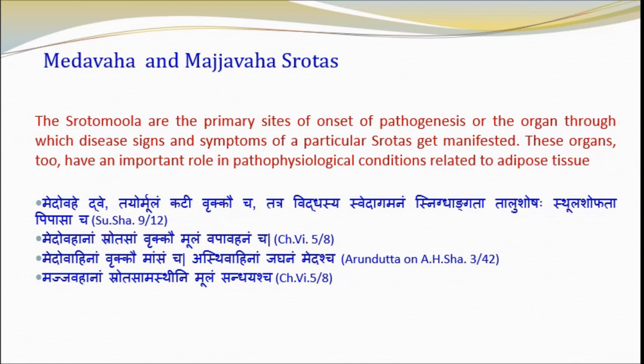The roots of Medhavahi Srotas are Kati, Vrikka and Vapavahni, and the mool of Majjavahi Srotas are Asthi and Sandhi. Vapavahni is an unctuous structure situated in the abdomen. In the abdominal cavity, any structure simulating an unctuous wick is not seen presently; rather Vapa is considered as omentum, a spread-out structure. The word Vartika may be replaced by Vartin, meaning 'resting' — an unctuous structure situated or resting in the abdomen. The Srotas mool are the primary sites of onset of pathogenesis, or the organs through which disease signs and symptoms of a particular Srotas get manifested, and these organs have an important role in pathophysiological conditions related to adipose tissue.